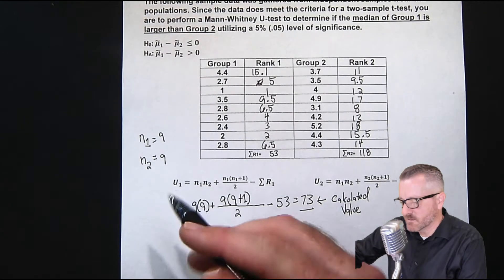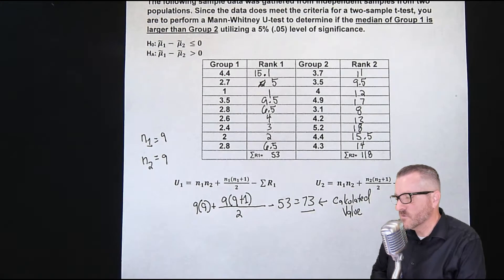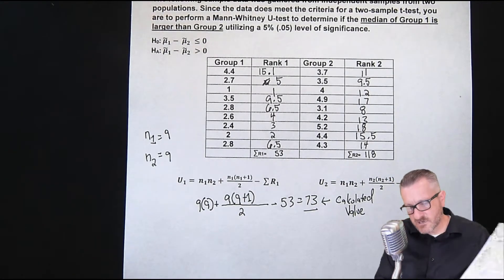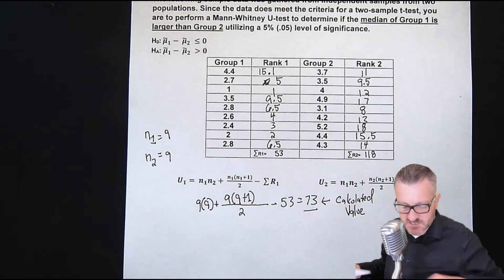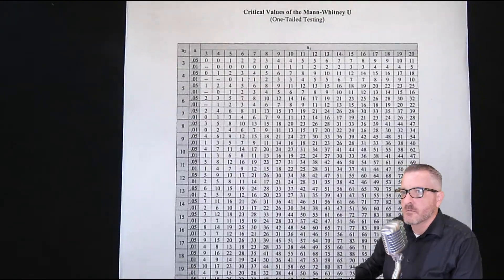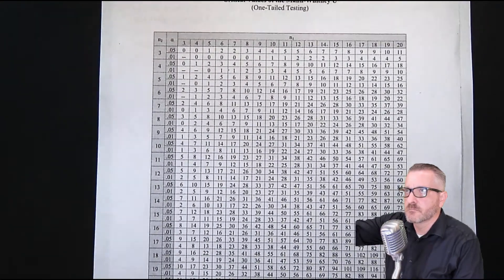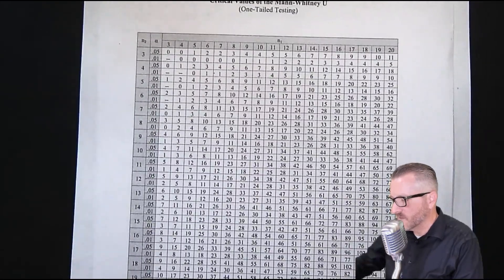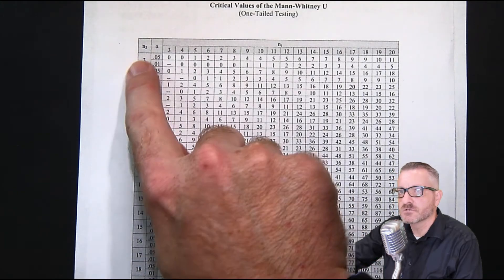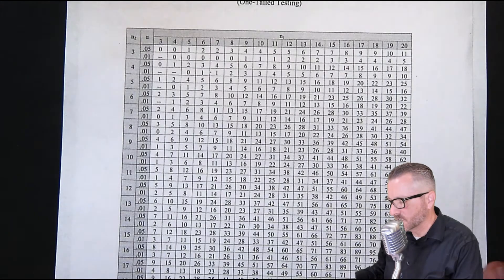And so in this case, remember over here, I listed the n1 is nine and n2 is nine. So the Mann-Whitney U test actually has a table to do this. It's like a degrees of freedom, but it's just what we do, I'll zoom in. What we do is we take the n1 and the n2, which is this side, and we find where they intersect.